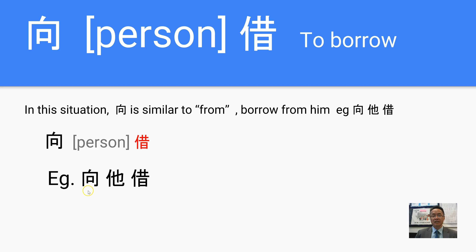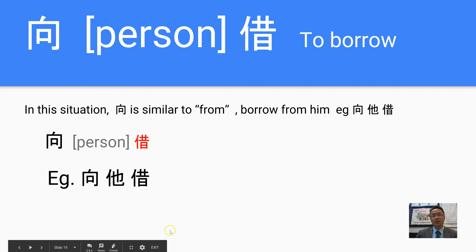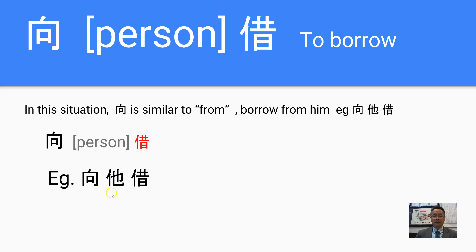For example: 'xiang ta jie' — xiang towards this person, jie. 'Xiang ta jie' means to borrow from him, borrow it from him.